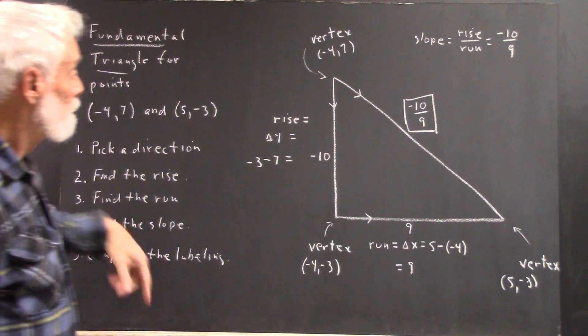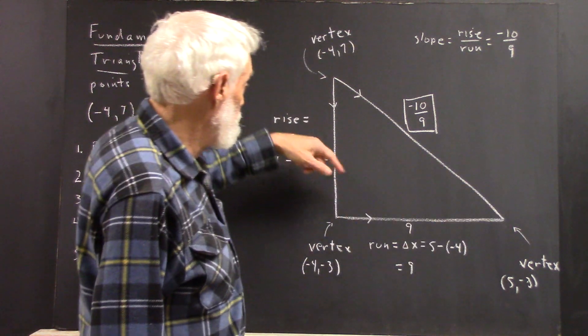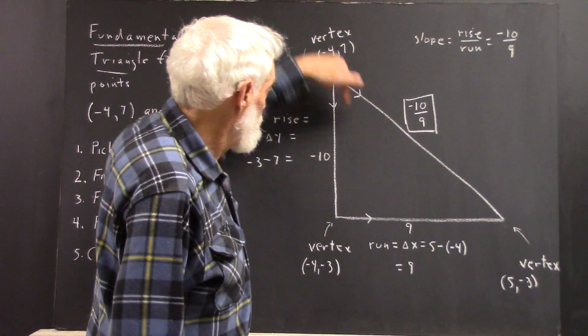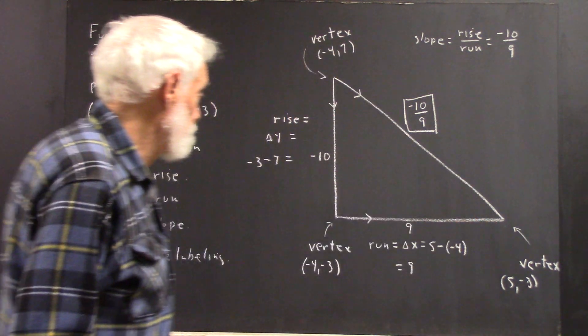We pick a direction. We're going to pick this direction from this point to this point, and we have one path, and then we have another path in the same direction.